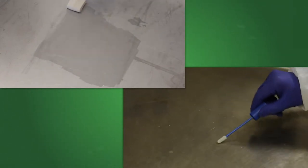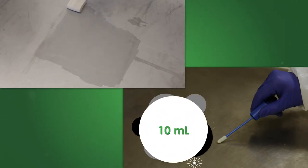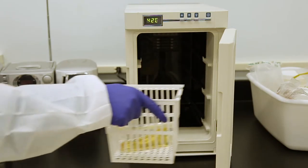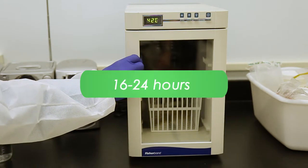For sponges, 100 milliliters of media is recommended. For swabs, 10 milliliters of media is recommended. These should be incubated at 42 degrees Celsius plus or minus one degree for 16 to 24 hours.